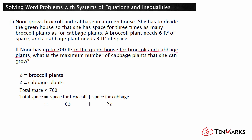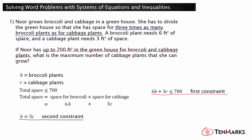Substitute this expression into the inequality that represents the first constraint. Here's the first constraint in terms of the variables. You also know that Noor needs to grow three times as many broccoli plants as cabbage plants. Represent this constraint by the equation B equals three C. Here's the second constraint in terms of the variables.